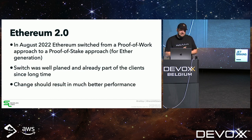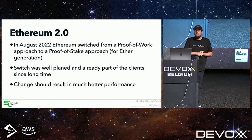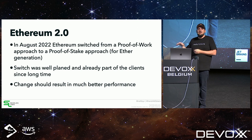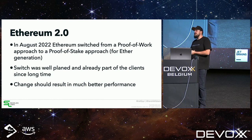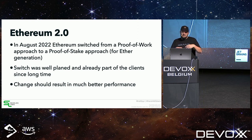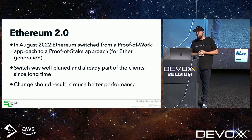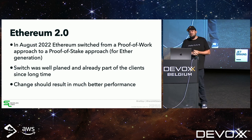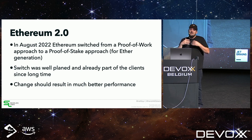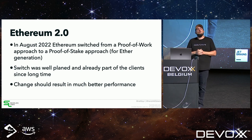Ethereum is addressing this. In August — just two months ago — they released what I'll call Ethereum 2.0, switching from a Proof of Work mechanism to a Proof of Stake approach for cryptographic consensus. This is expected to have a significant impact on the network's energy consumption.